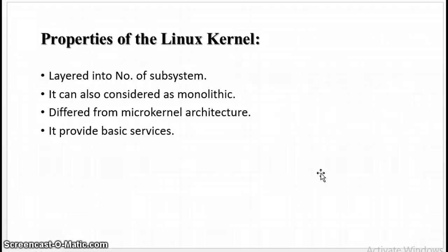The next is the properties of the Linux kernel. The kernel is divided into a number of subsystems. Linux can also be considered as a monolithic because it lumps all the basic services into the kernel. This is the difference from microkernel architecture, because it provides basic services such as communication, I/O, memory and process management, and more basic services.